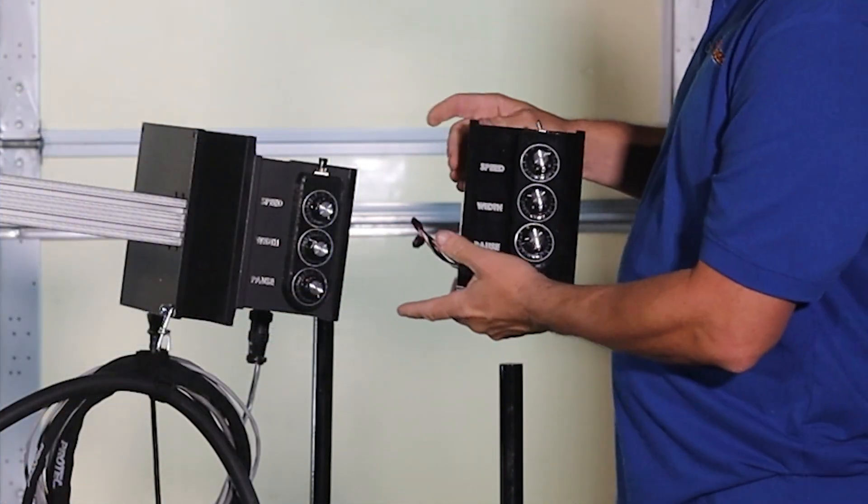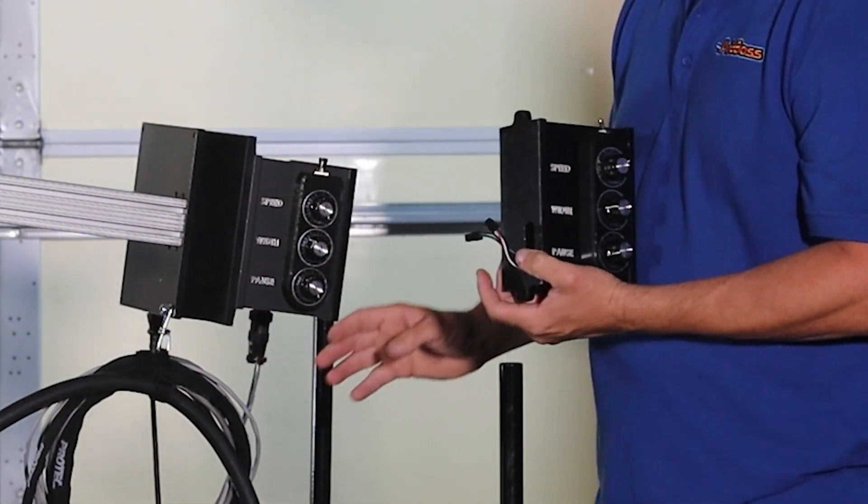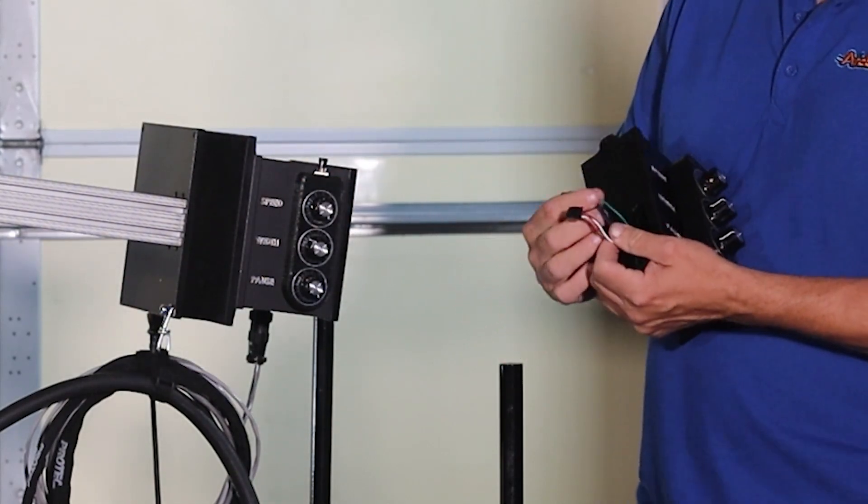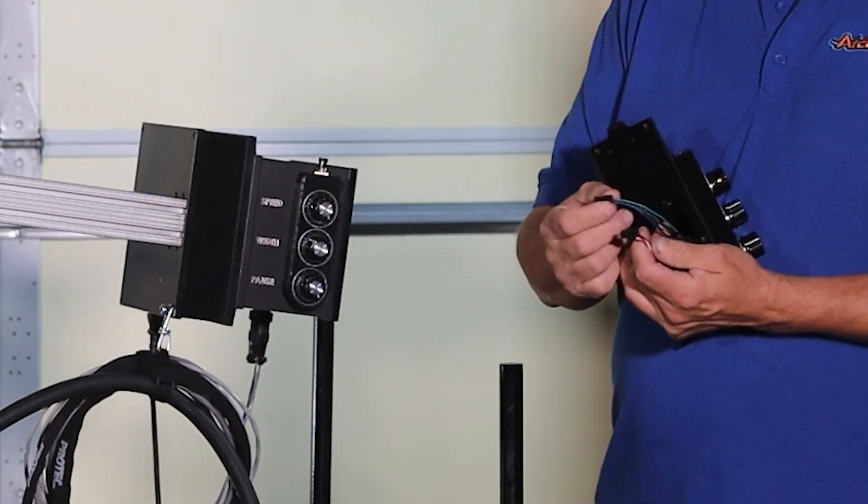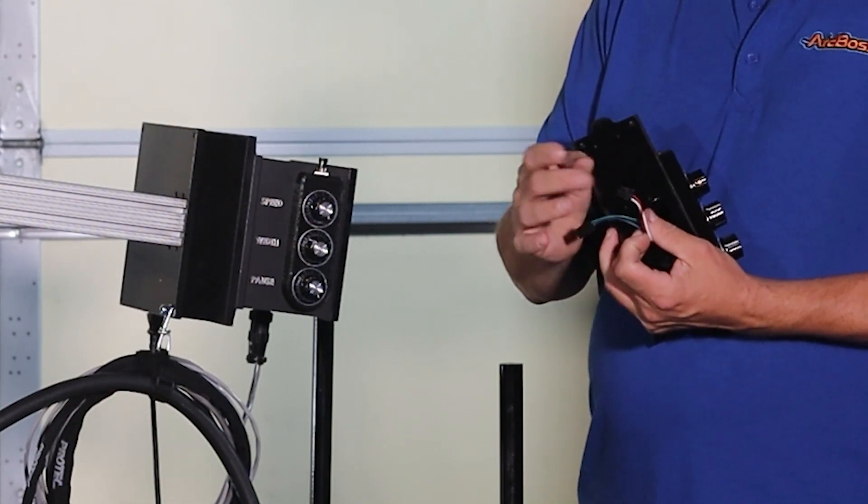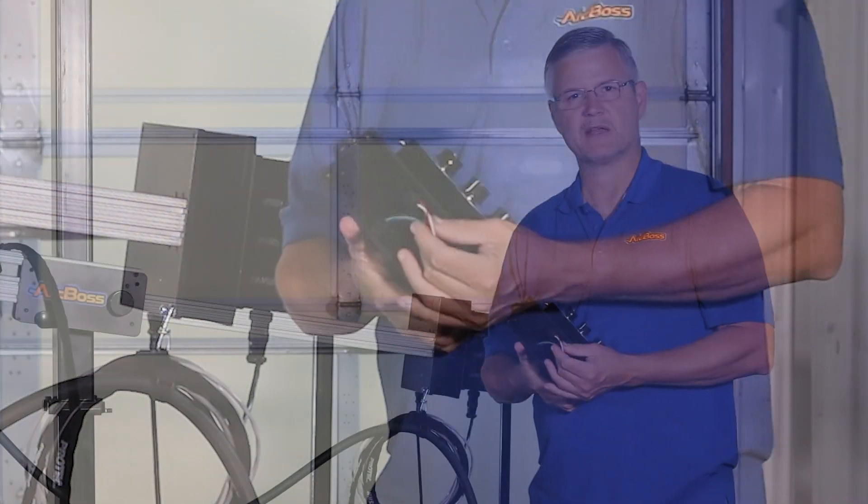There's two quarter-twenty socket head cap screws right here and right here. Pop those out, unplug the existing box, plug in the new box. There's a male connector and a female connector. You can't get them backwards.